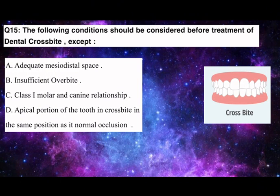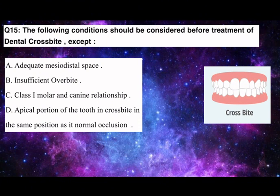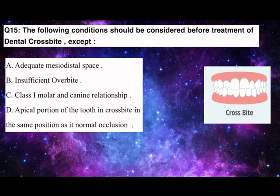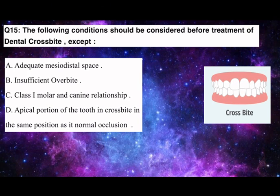Q15. The following conditions should be considered before treatment of dental crossbite, except: A. Adequate mesiodistal space. B. Insufficient overbite. C. Class 1 molar and canine relationship. D. Apical portion of the tooth in crossbite in the same position as in normal occlusion.